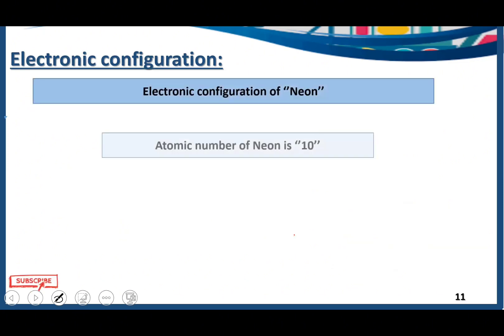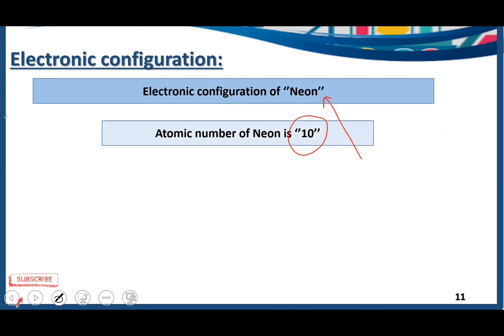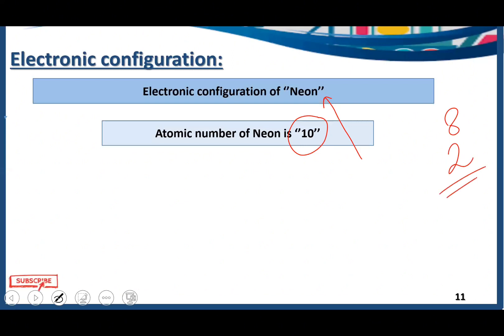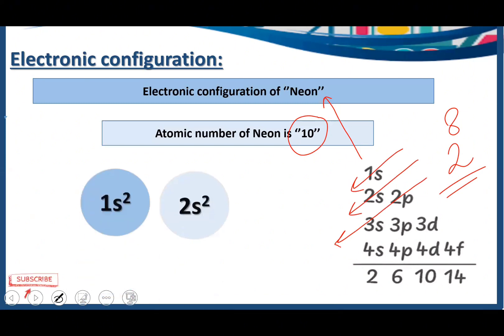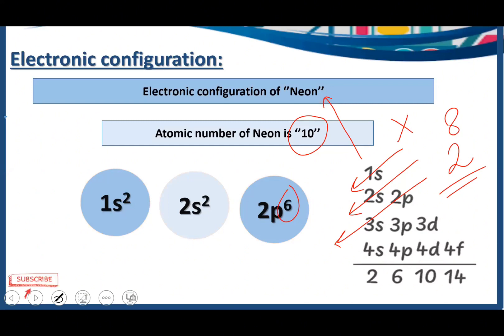Electronic configuration of neon — atomic number 10. The most important thing about neon is that it is a stable noble gas. Noble gases do not react with any other element because their outer shell already has 8 electrons, fulfilling the octet rule. The electronic configuration of neon is 1s2, 2s2, 2p6. We are not allowed to accommodate more than 6 electrons in the p subshell.